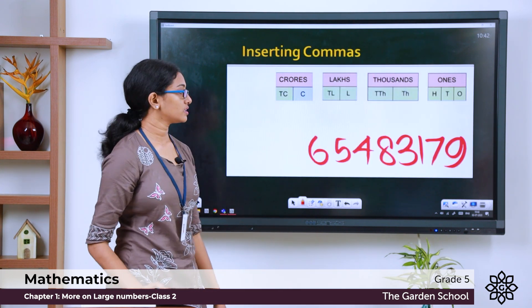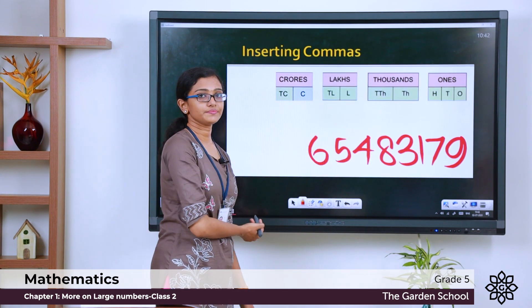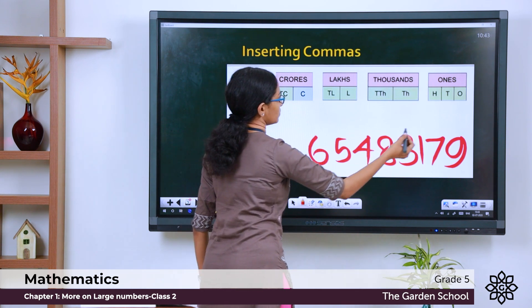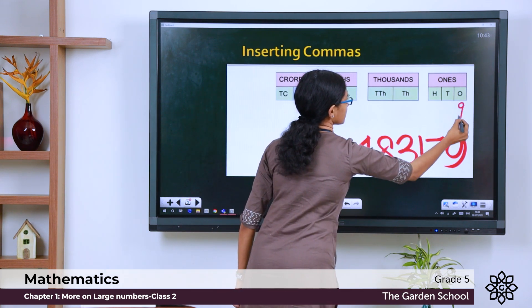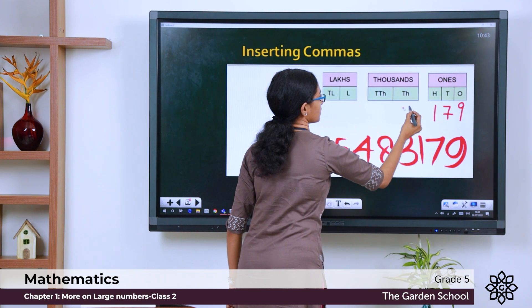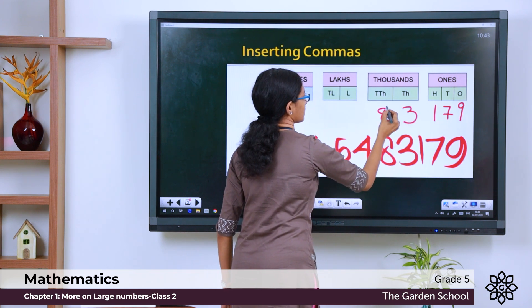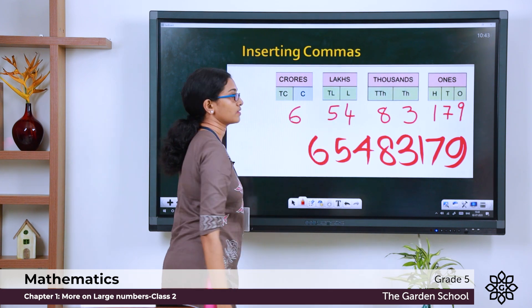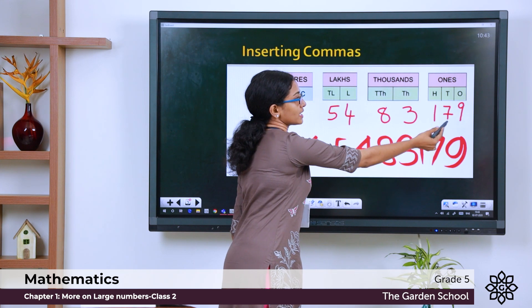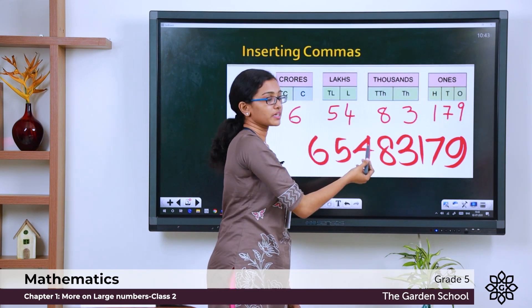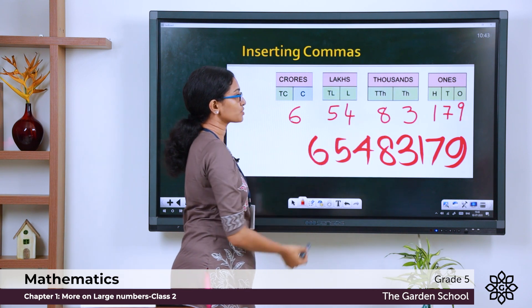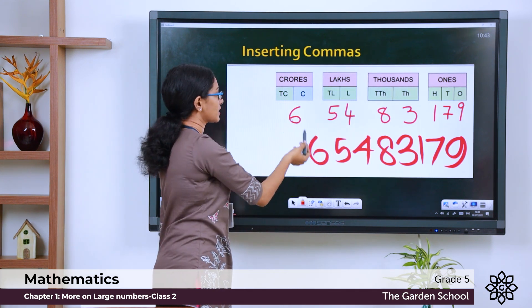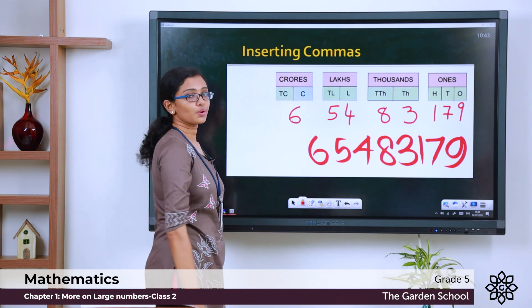Let us see that with an example. We have a number here. Let us try writing this number in the place value chart. We can see the digits 179 will come under the 1s period. The digits 8 and 3 will come under the 1000s period. Digits 5 and 4 will come under the lakhs period and the digit 6 will come under the crores period.